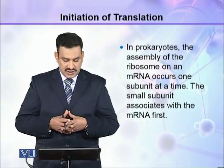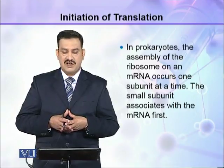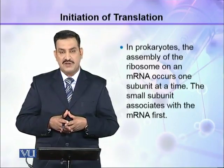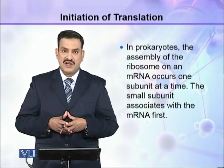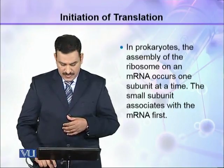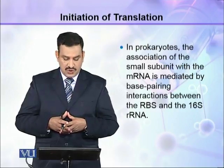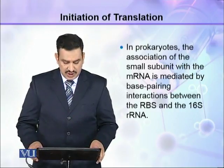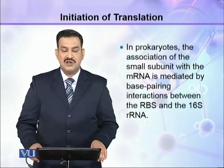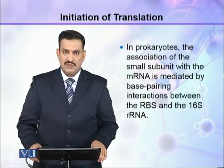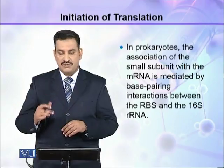In prokaryotes, the assembly of the ribosome on an mRNA occurs one subunit at a time. The small subunit associates with the mRNA first. In prokaryotes, the association of the small subunit with the mRNA is mediated by base pairing interactions between the RBS (ribosomal binding site) and the 16S rRNA of the ribosome.